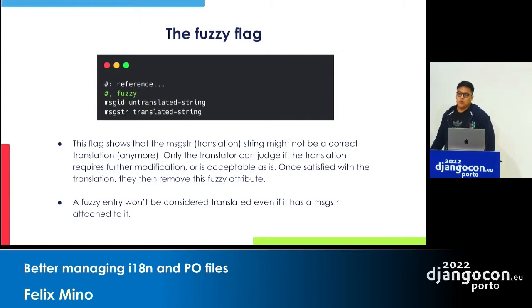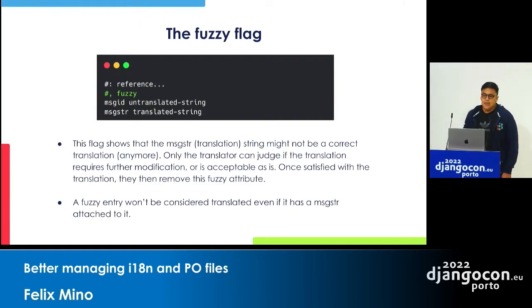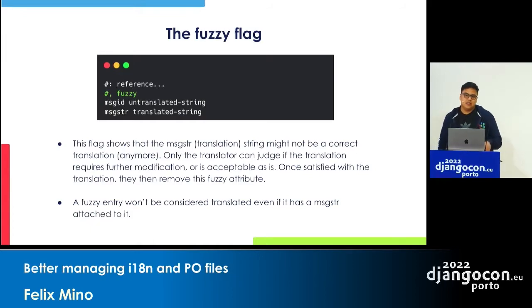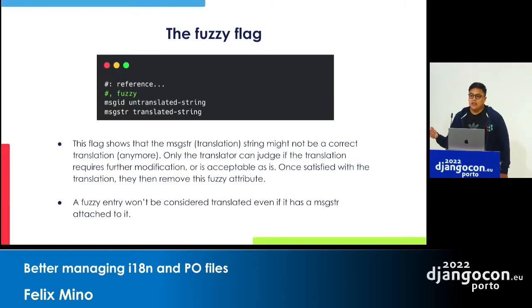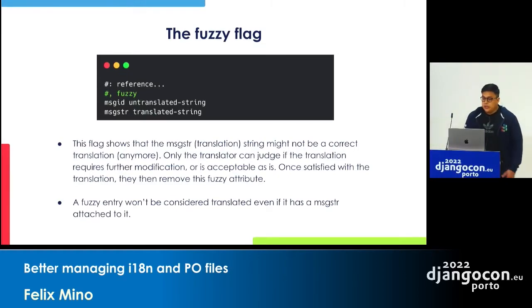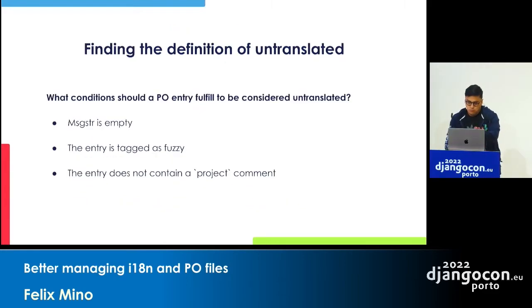Another important concept is the fuzzy flag. This flag indicates that a translation could no longer be correct — it happens when a string changes and the 'make messages' command detects that change, but only a translator can judge whether the translation is still correct. So basically, if you have the fuzzy flag, something is not translated or the translation may be wrong. We took this fuzzy flag and considered it as a not-translated entry.